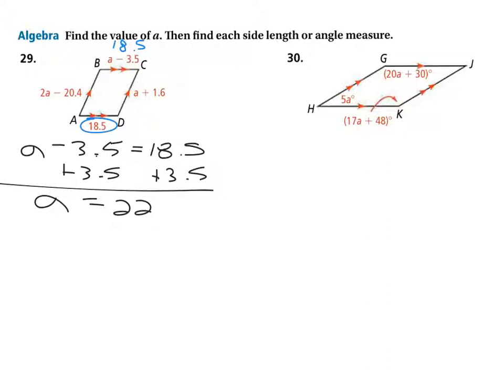So now all we need to do is we need to plug it into one of these other two equations, or expressions rather - this one or this one. And because I would have to on the one on the left actually multiply by two and then subtract 20.4, I'm going to avoid that one and I'm going to just plug it into a plus 1.6, because then it becomes 22 plus 1.6 or 23.6.